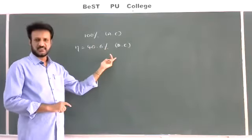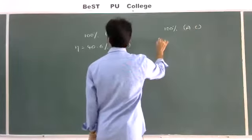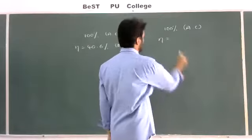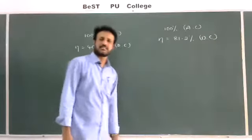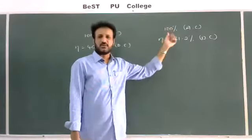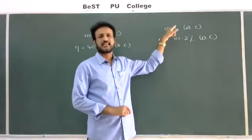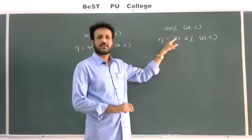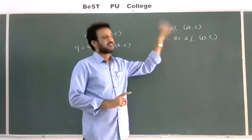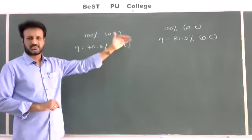In the case of the half wave rectifier, AC is approximately 60% but DC is only 40%. Whereas in the full wave rectifier, we apply 100% AC and get 81.2% efficiency. Out of 100% AC, almost 81.2% is converted into DC. That's why in the full wave rectifier, the DC component is always greater than the AC component, whereas in the half wave rectifier, the DC component is always less than the AC component.